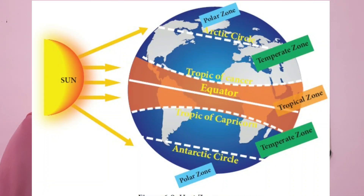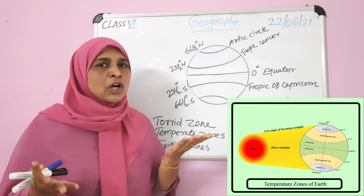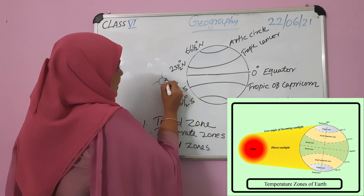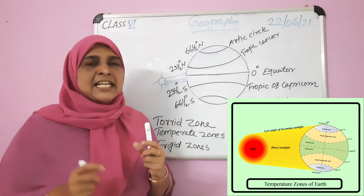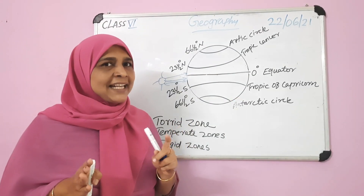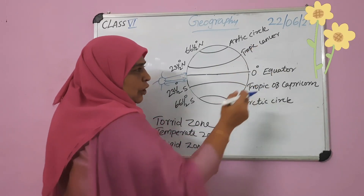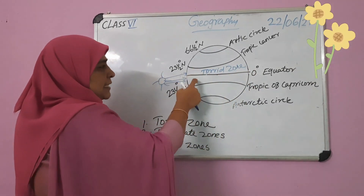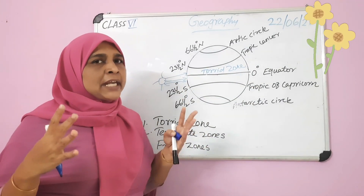All places located in between Tropic of Cancer and Tropic of Capricorn experience direct rays of the sun, and those places get more amount of heat. This is the sun — these places get direct rays, and the climate of this region is very hot. Torrid means hot. The region between Tropic of Cancer and Tropic of Capricorn is called the Torrid zone, and these places get the maximum amount of heat.